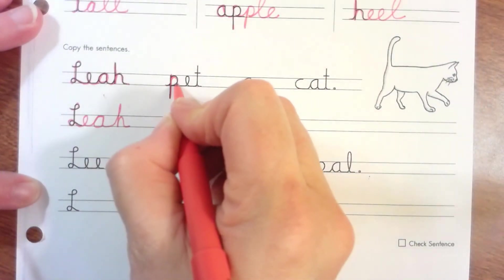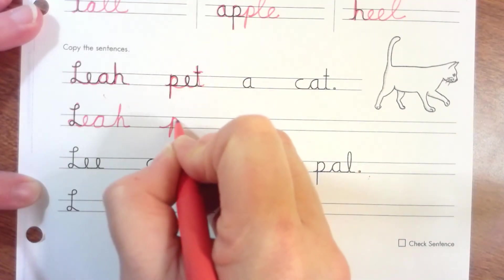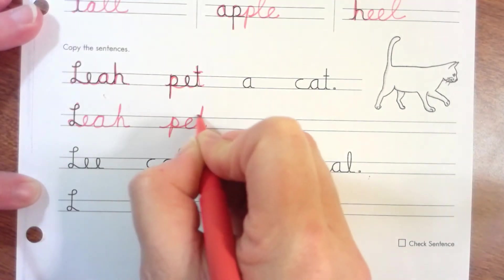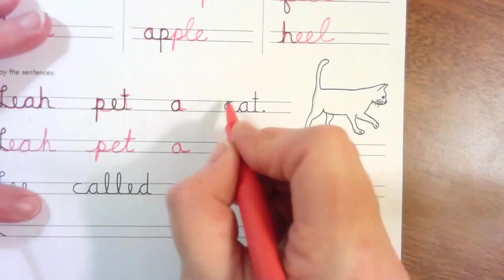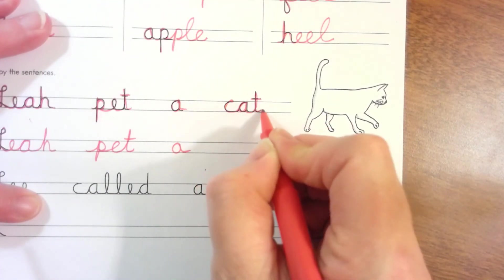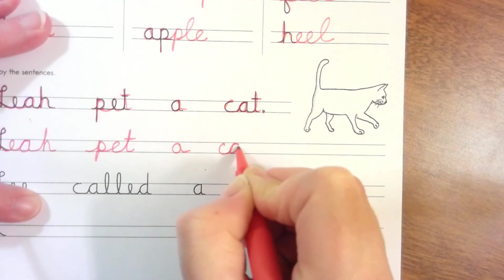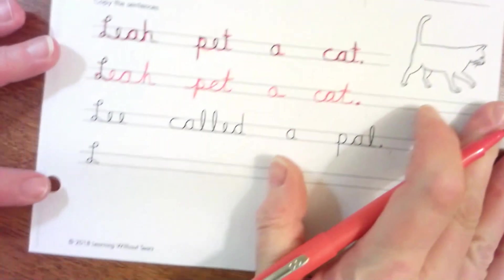Now pet. P-E-T. P-E-T. Nice work. Muscle memory. C-A-T. And a period at the end of a sentence.